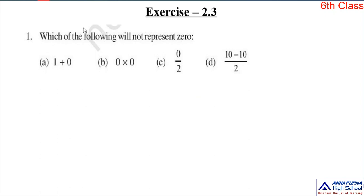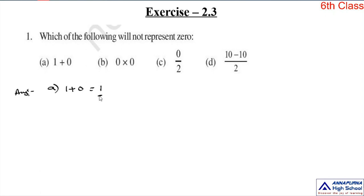Which of the following will not represent 0? Here four options are there. We find the solution for each one. First one, option A: 1 plus 0. What is the answer? 1 plus 0 is equal to 1. Here the result is not equal to 0.